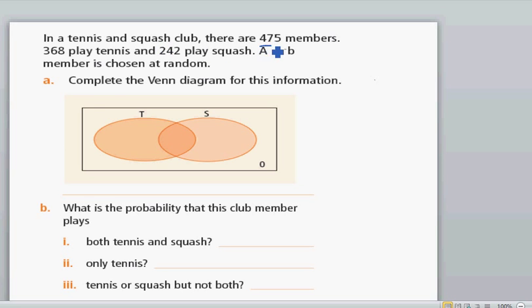There are 475 members. 368 play tennis and 242 play squash. By just looking at this, you can say well, these numbers don't seem to add up. But if you read carefully, let's write what is given.